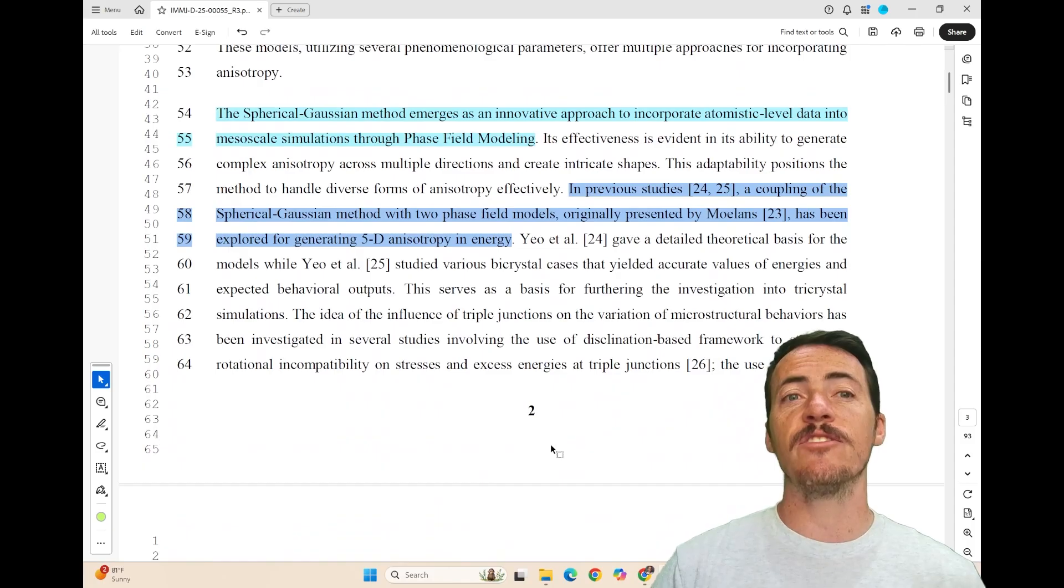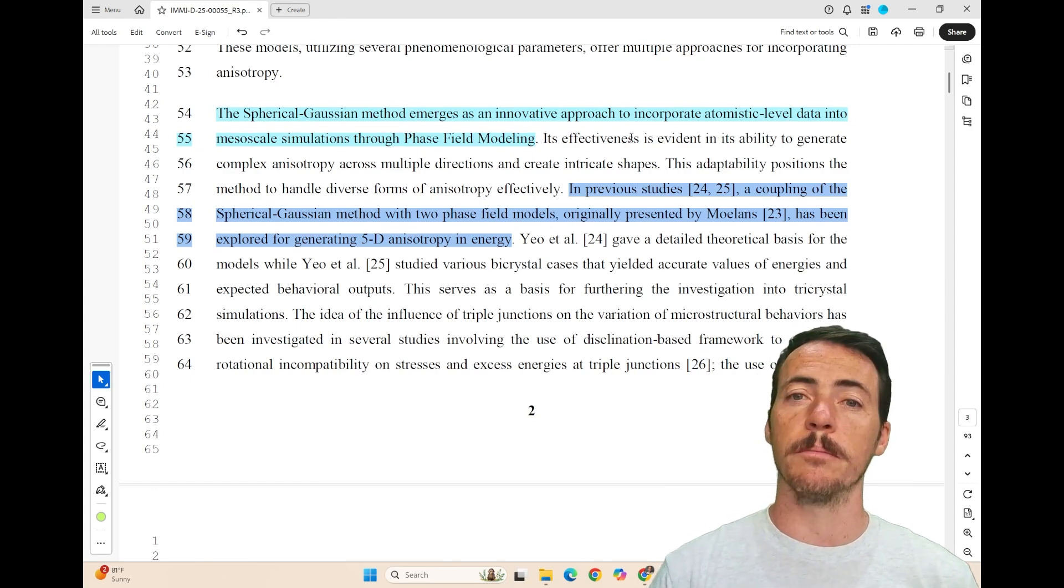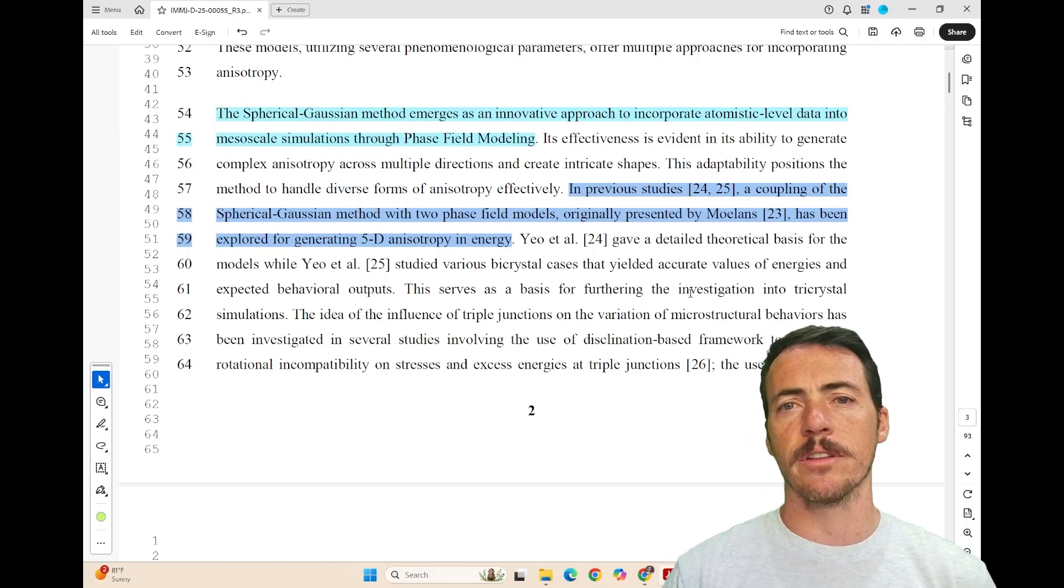The authors do point out that the spherical Gaussian method has emerged as a good approach to incorporate atom level data into these mesoscale simulations through phase field modeling. So what does this paper build on? There's quite a bit of prior art here they have to consider.